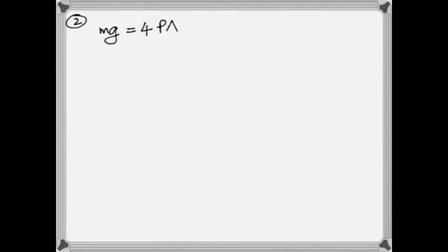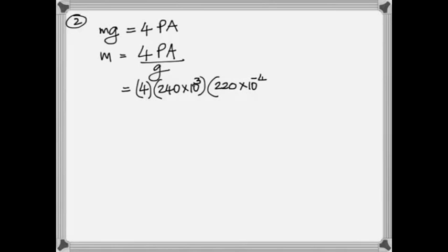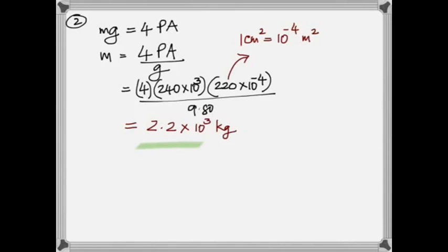There it is for you, no suspense. So I wrote the weight should be equal to four times PA. Where did I get that four from? Four tires. What are we trying to find? We're trying to find the mass of the car. That's why I made M the subject: four times P times area by g. That is 4 times 240 times 10^3 times the area 220 times 10^-4. I'm showing you how one centimeter squared is 10^-4 meter squared. So the mass of the car is 2.2 times 10^3 kilograms.